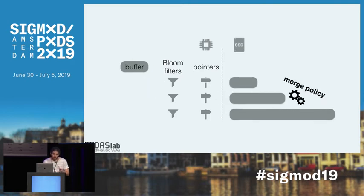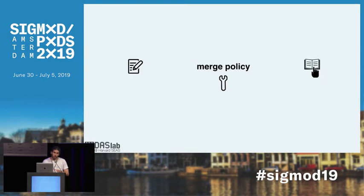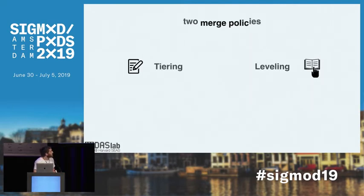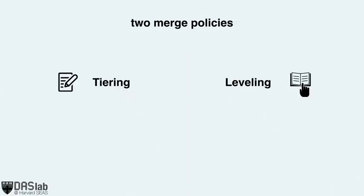A crucial design aspect for LSM-Tree is the merge policy, which dictates when and how you merge runs. The merge policy controls an important trade-off between the cost of reads and writes. As you increase merge greediness, entries will participate in more merge operations across their lifetime, giving you a higher amortized write cost. On the other hand, you'll have fewer runs in the system, so reads will tend to be cheaper. There are typically two types of merge policies widely deployed in industry: tiering, which is more write-optimized, and leveling, which is more read-optimized.